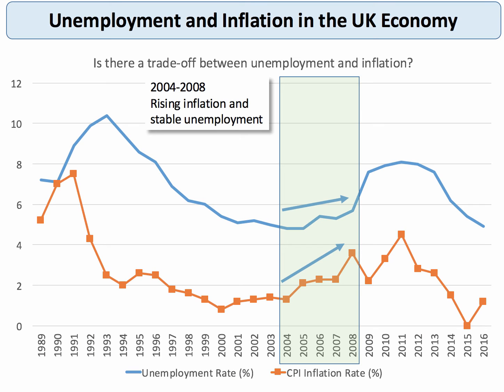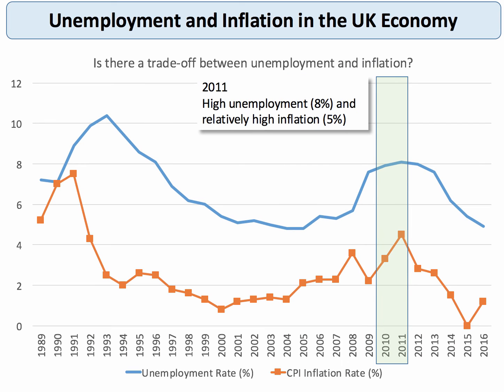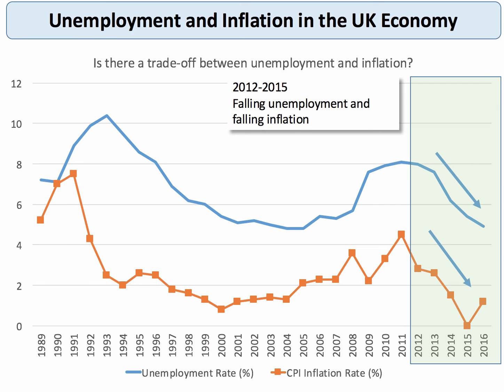Then of course we get the global financial crisis — the difficult days of 2009 and into the current decade. 2010–2011 were years where the macroeconomic objectives were not moving in a favourable direction for the UK. Unemployment was heading north again towards 8% of the labour force, and inflation, particularly as you can see in 2011, was more than twice the government's target at 4.5%.